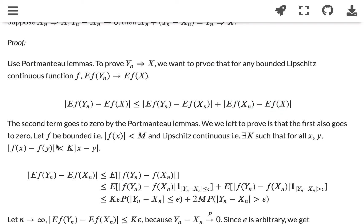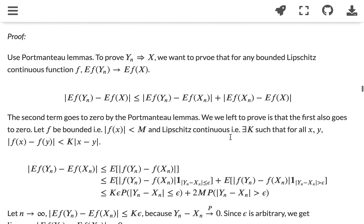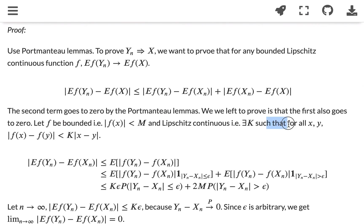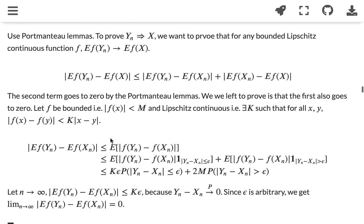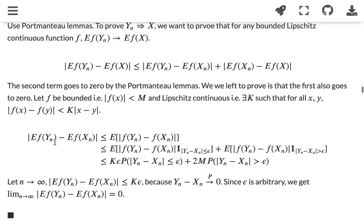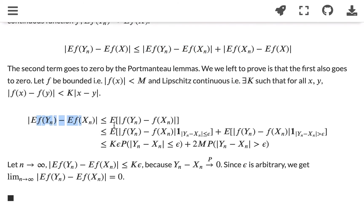What remains is showing the first term goes to zero. Since f is bounded, we know |f| ≤ m. Since f is Lipschitz continuous, there exists k such that |f(x) - f(y)| ≤ k|x - y|. Then the first term |E[f(yn)] - E[f(xn)]| is less than or equal to the expected value of |f(yn) - f(xn)|, taking the absolute value inside the integral.